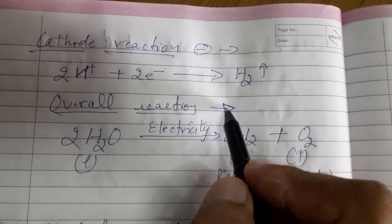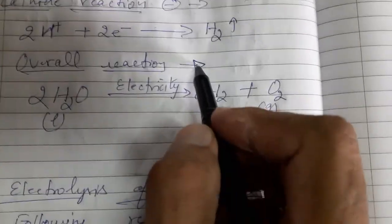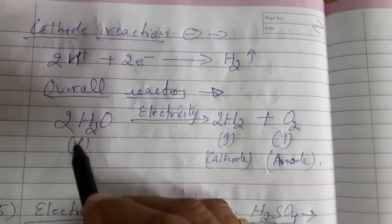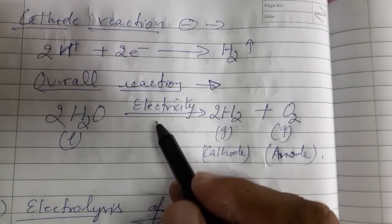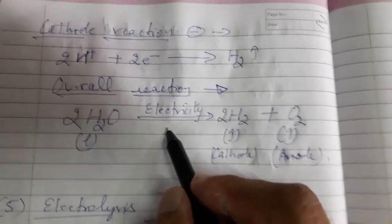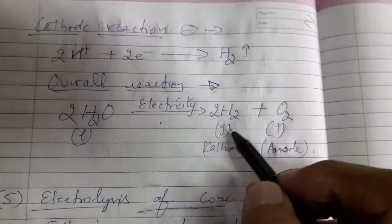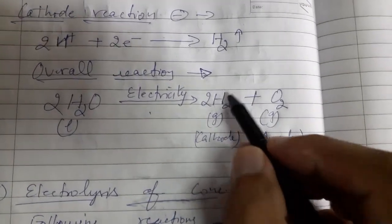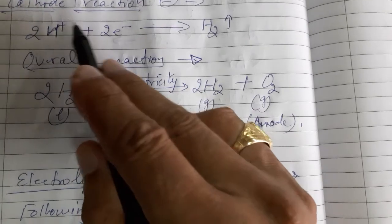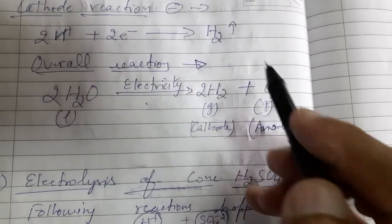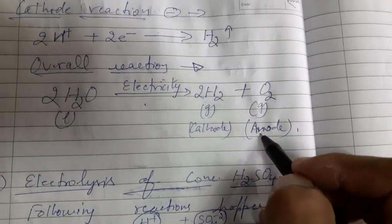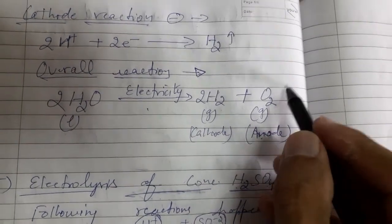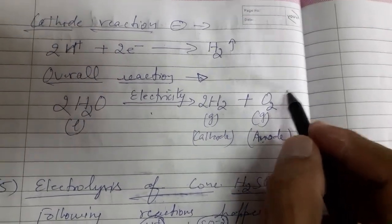So the overall reaction of electrolysis of water: when electricity is passed through water, hydrogen gas is liberated at the cathode and oxygen gas is liberated at the anode.